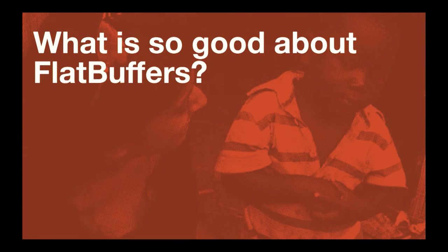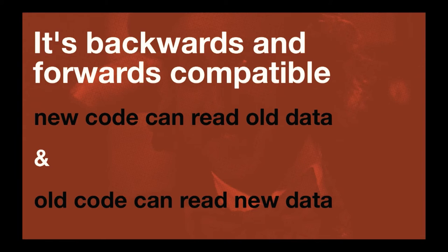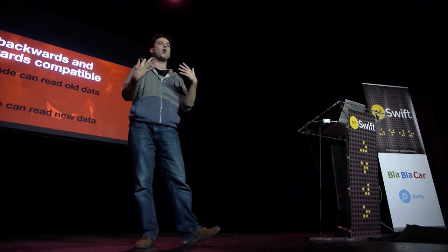First of all, I would like to tell you why it is actually good to use Flatbuffers. The first and most important thing is there is no parsing involved. Even though the parsing of JSON is pretty fast in Objective-C, it still takes some time, specifically if you have a large JSON file. With Flatbuffers, everything is done lazily, so there is literally zero cost for parsing. It's also backwards and forwards compatible, meaning that new code can read old data and old code can read new data, which can come pretty handy, specifically if you have different versions of your application on different platforms.